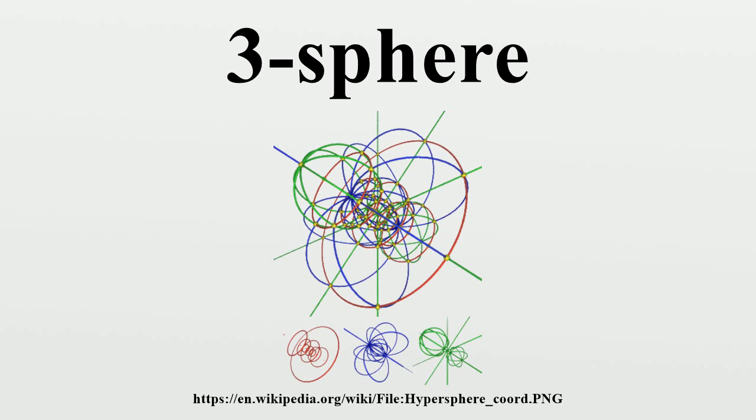Topological Construction: There are several well-known constructions of the three-sphere. Here we describe gluing a pair of three-balls and the one-point compactification. A three-sphere can be constructed topologically by gluing together the boundaries of a pair of three-balls. The boundary of a three-ball is a two-sphere, and these two two-spheres are to be identified. Imagine a pair of three-balls of the same size, superpose them so their boundaries match, and let matching pairs of points be identically equivalent. In analogy with the two-sphere, the gluing surface is called an equatorial sphere.